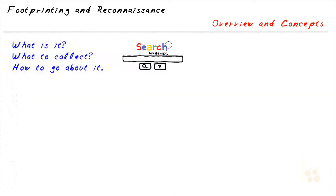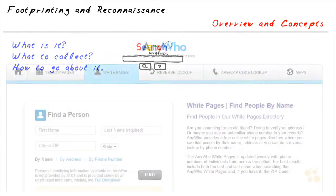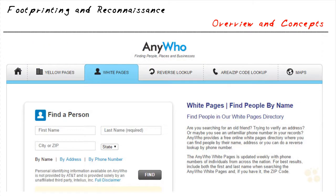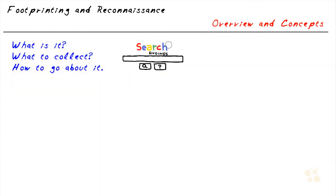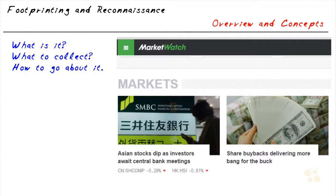We can also find location information, including maps and satellite images of the physical locations of our potential target. We can leverage people searches to get residential addresses, email addresses, contact numbers, date of birth, and a whole host of other useful information. We can also gather information from financial services that have details about the company — the market value of shares, competitive details or advantages of that company, the company profile, and more.